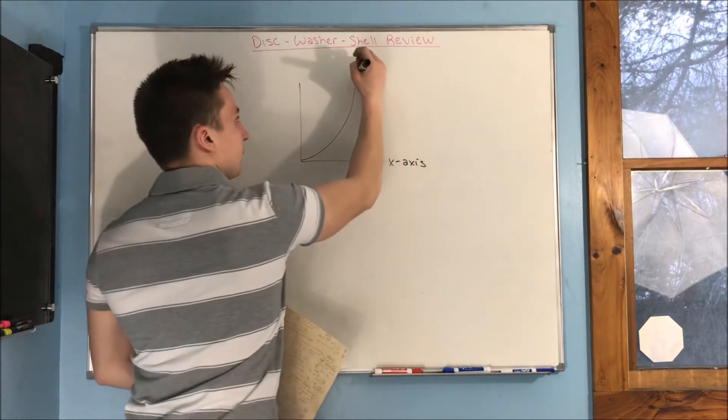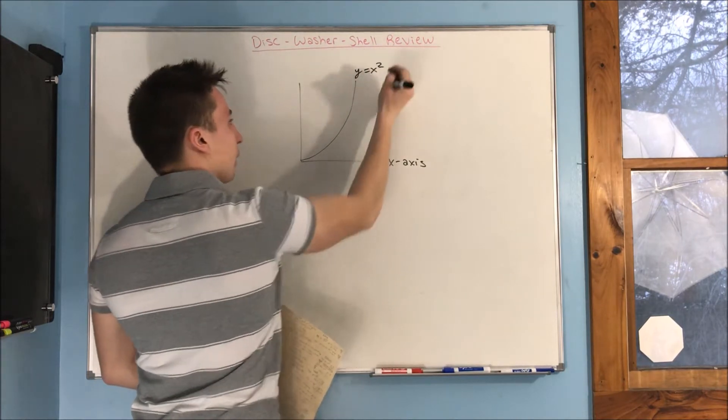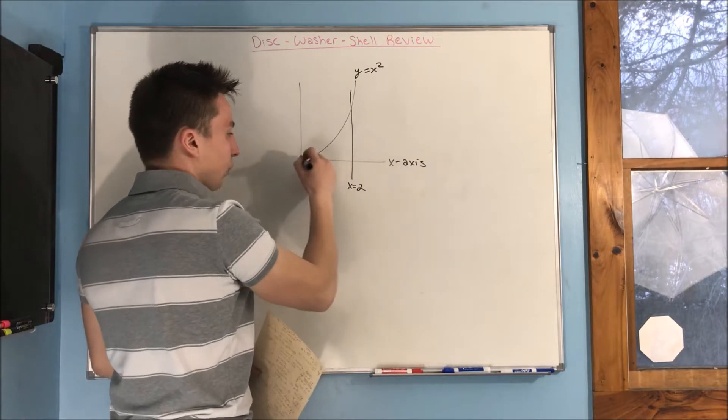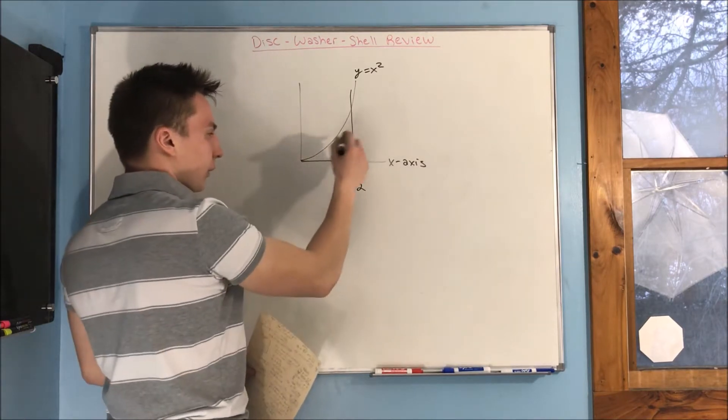And it's going to be bounded by y equals x squared, x equals 2, and y equals 0. So we get a region here.